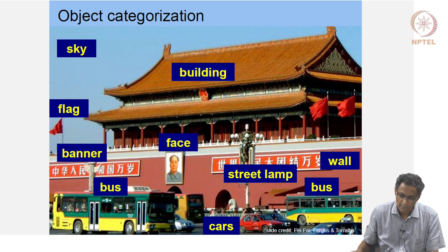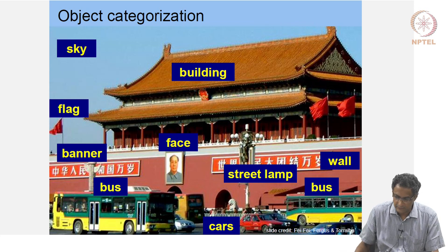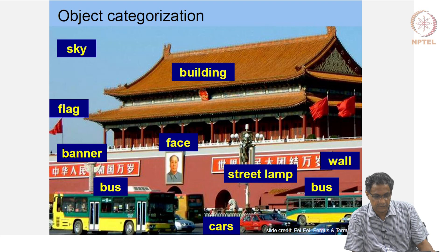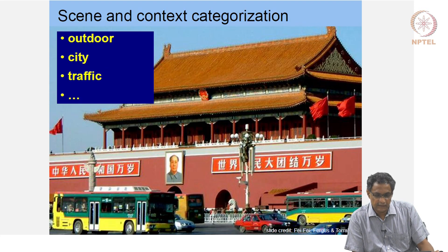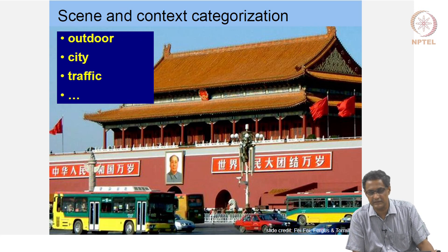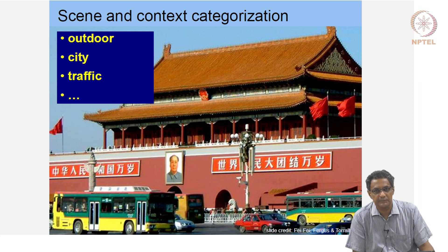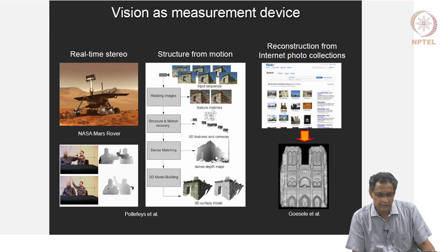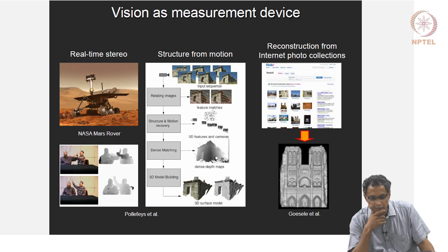Some of these things will become more clear as we go on. For scene and context categorization, you can categorize: is this an indoor scene, is this a city or a village, is there traffic on the road? What kind of categorization you want to do is entirely up to the application. For metric information, there are the most common examples involving measurements.